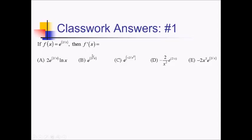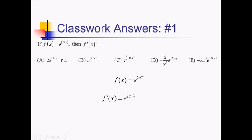On this problem we want the derivative of e to the 2 over x. To make this easier to work with, I'm going to rewrite this as e to the 2x to the negative 1. Now I can use the chain rule and a little power rule inside the exponent. The derivative of the outer function e to the something is also e to the something — e to the 2x to the negative 1 — but now I have to multiply by the derivative of 2x to the negative 1, which is negative 2x to the negative 2.